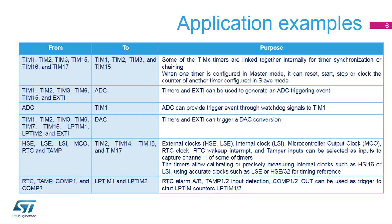Triggering an ADC through a timer or EXTI event. Triggering a timer through an ADC watchdog signal when a predefined threshold value is crossed by the analog input. Calibrating HSI16 and LSI clocks — for example, measuring the external oscillator LSE frequency by a timer clocked by the calibrated internal oscillator. Starting low-power timers from an RTC alarm, a tamper event, or comparator event.